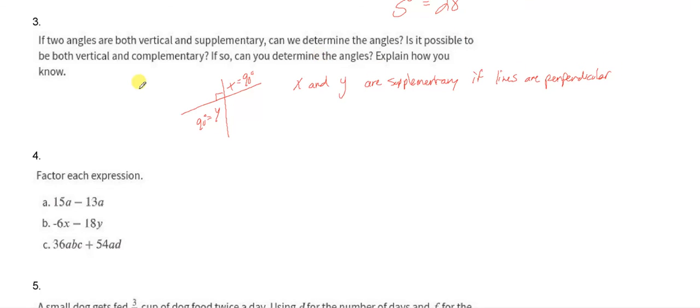Is it possible for them to be vertical and complementary? Well, they could be vertical and complementary if they both equaled 45 degrees. Right? And these types of angles would be vertical and complementary.